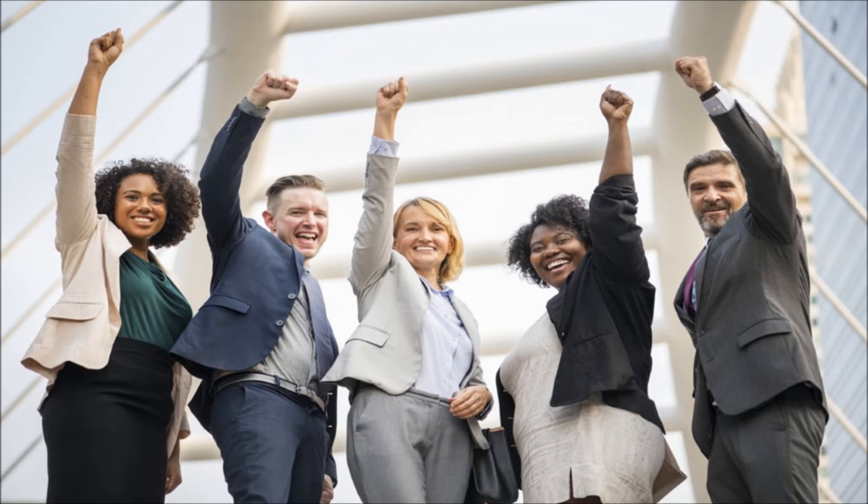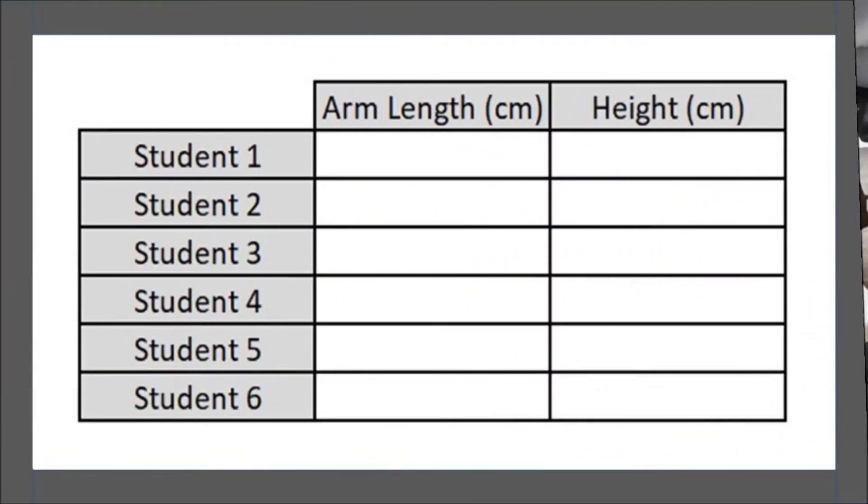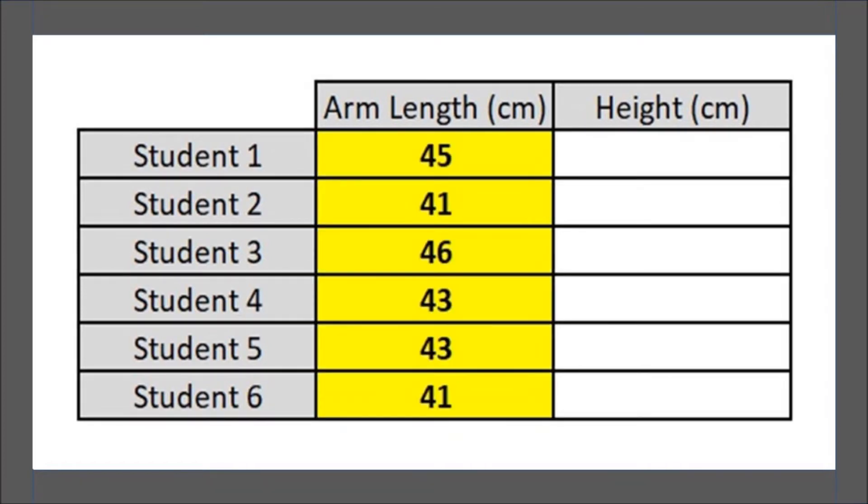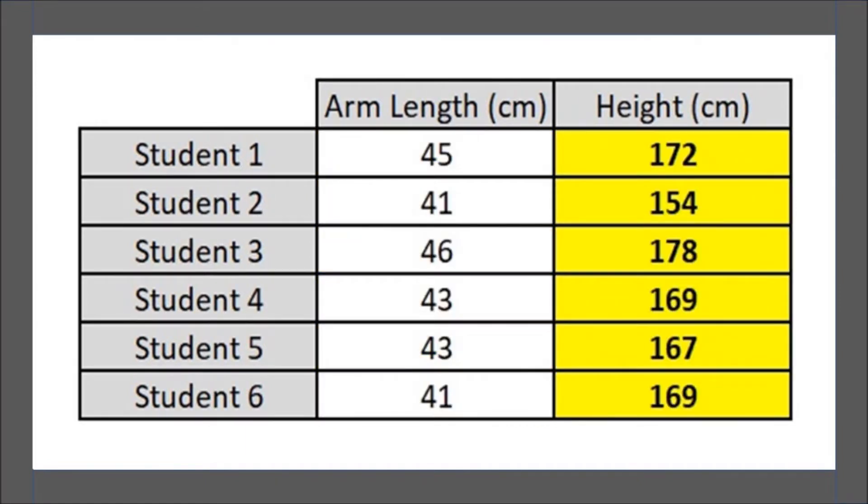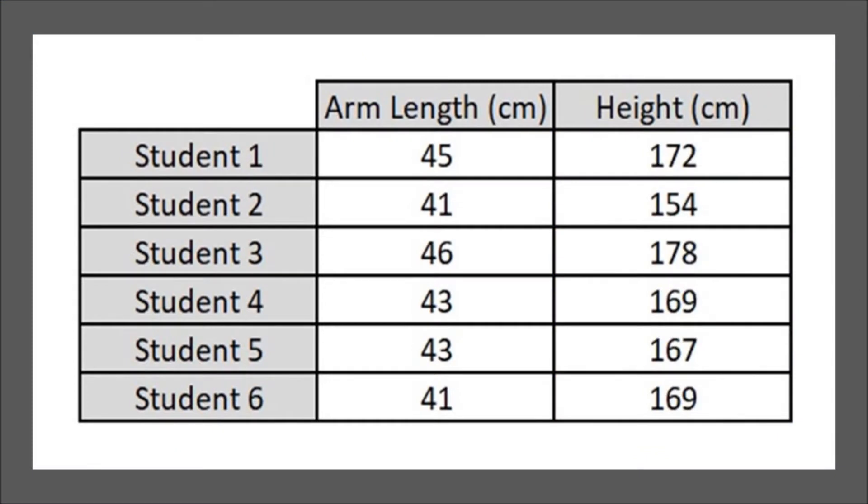We had five classmates and with me that made six. We measured everybody's arm length, which is the first column here highlighted, then we measured everyone's height, which is the second column highlighted. We graphed this data with arm length as the y-axis and height on the x-axis.